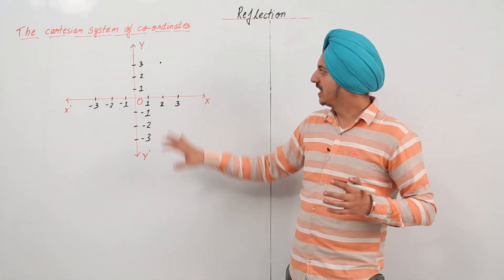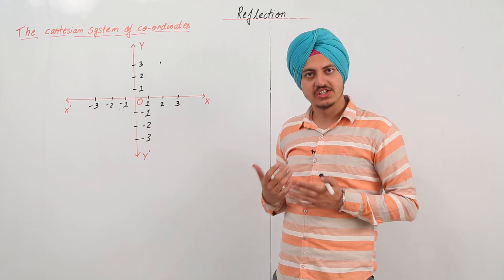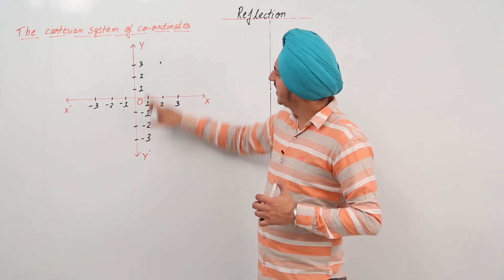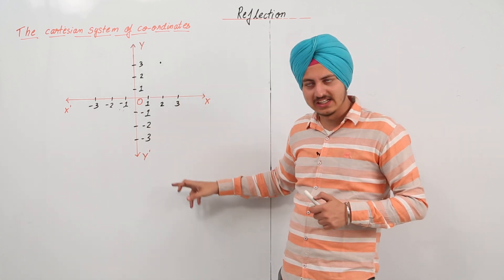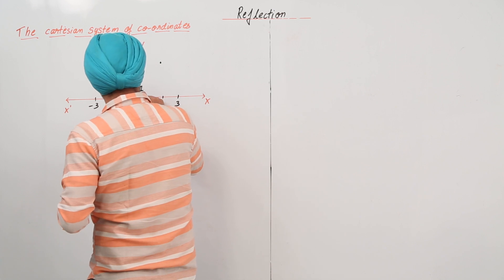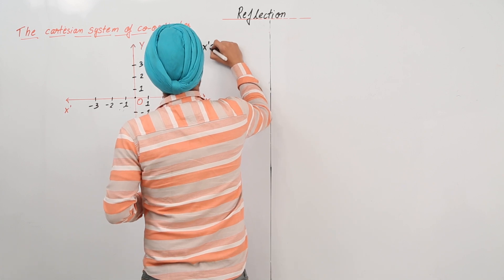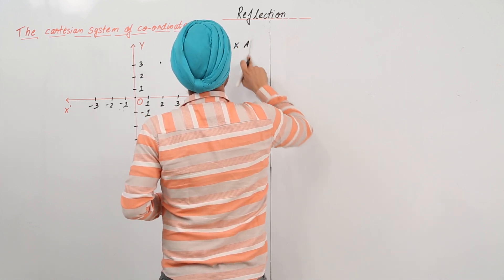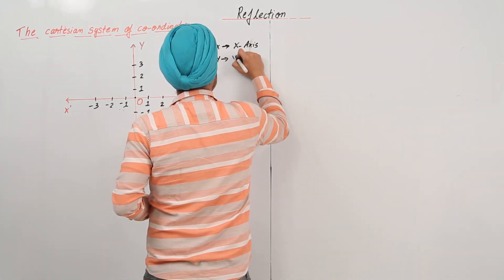Let's look at a typical graph for the Cartesian system. We make this kind of graph where the vertical line, y'Oy, is called the y-axis, and the horizontal line, x'Ox, is called the x-axis.